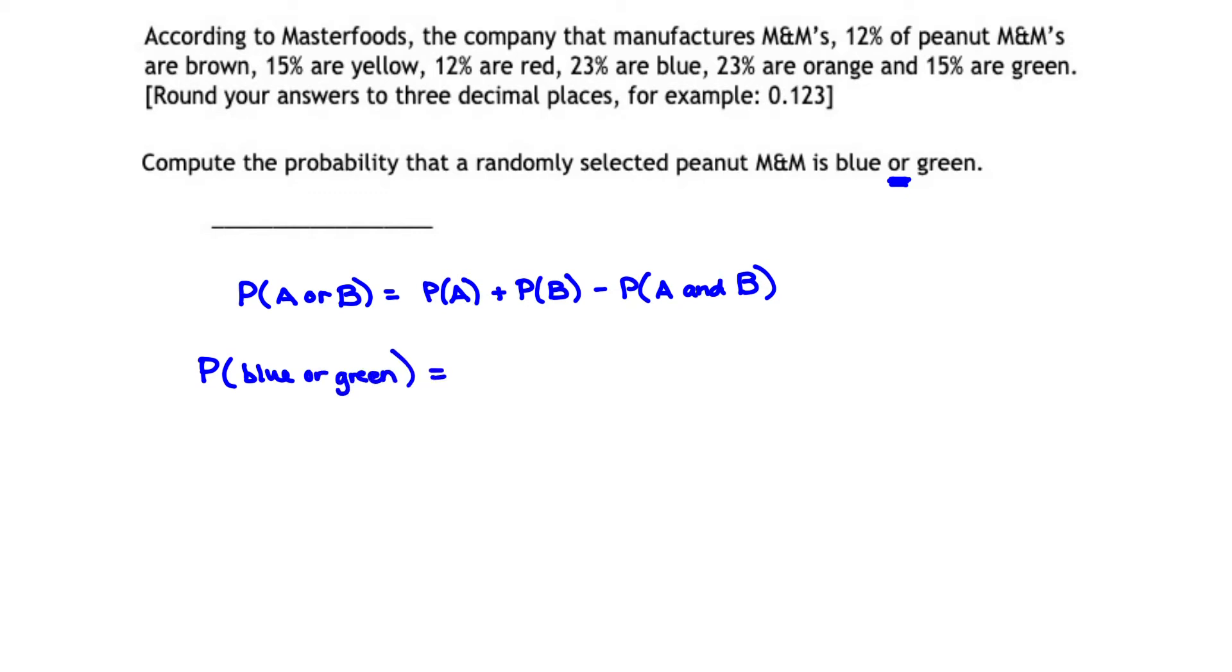For that to occur, we're going to take the probability that the M&M is blue plus the probability that the M&M is green minus the probability that the M&M is blue and green. Let's fill in some blanks now.